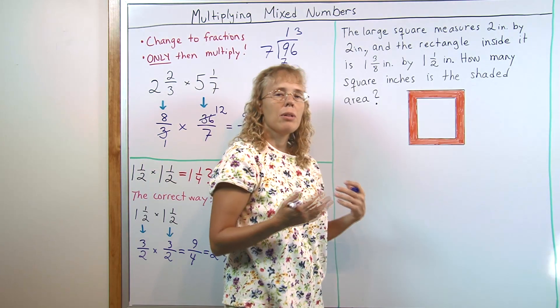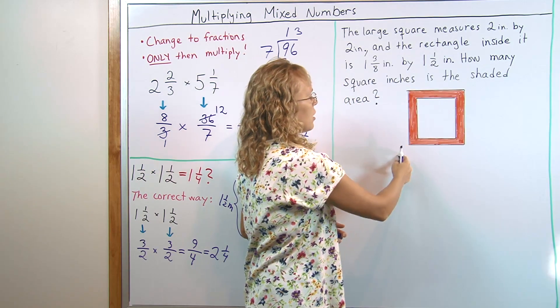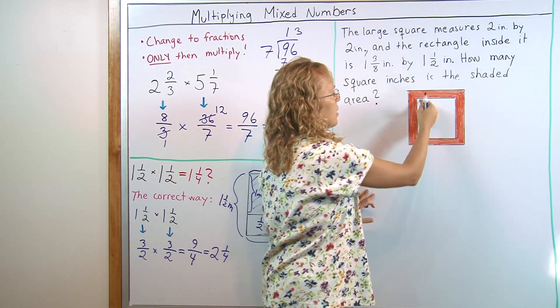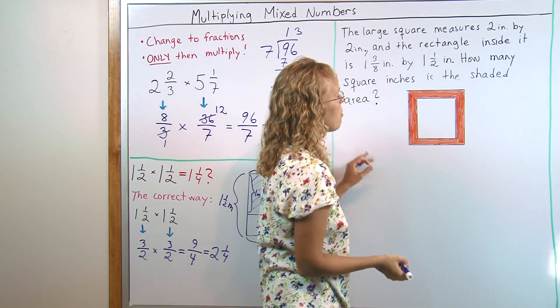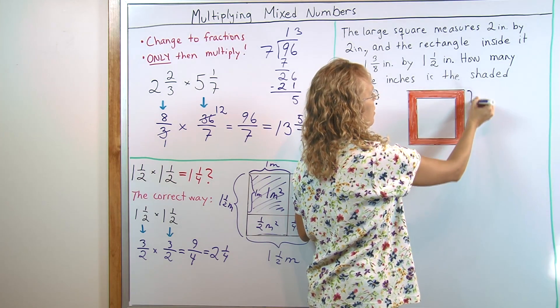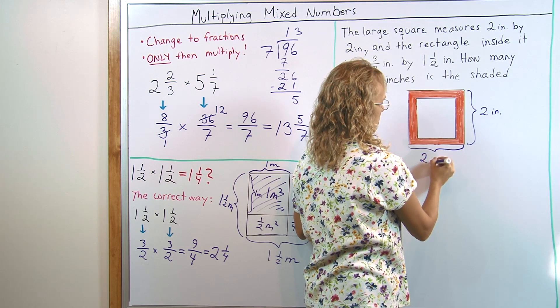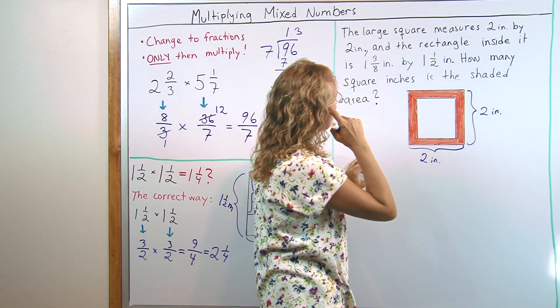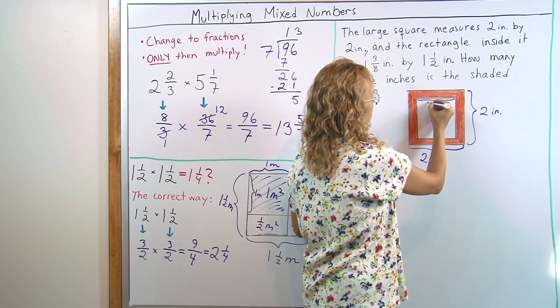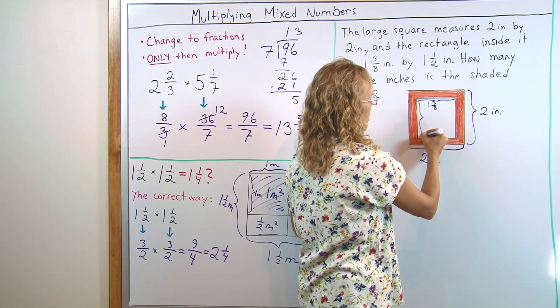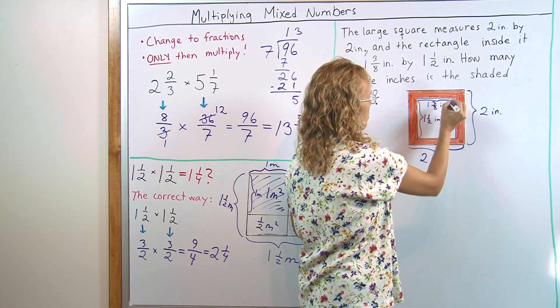And the main principle is that we find it by subtracting. We first find the area of this large square. Then we find the area inside it and subtract those two. So, let me first mark in my picture what I have here. This is 2. And this is 2. Then 1 and 3 eighths would be this here. And then this is 1 and 1 half inches.